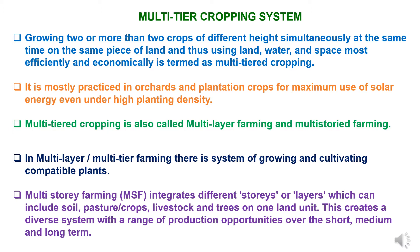In multi-layer or multi-tier farming system, there is a system of growing and cultivating compatible plants. Multi-story farming integrates different stories or layers of different heights of crops, which can include soil, pasture crops, livestock and trees on the same land unit. This system creates a diverse system with a range of production opportunities over the short term, medium term and long term by combination of different nature of crops.